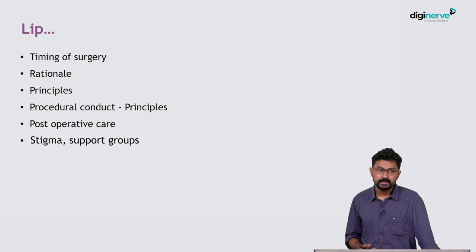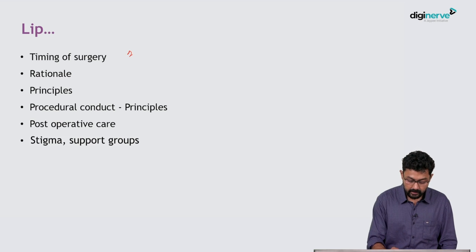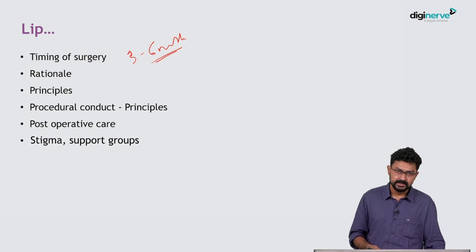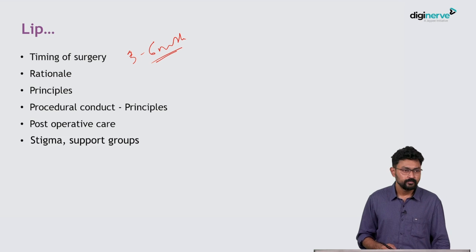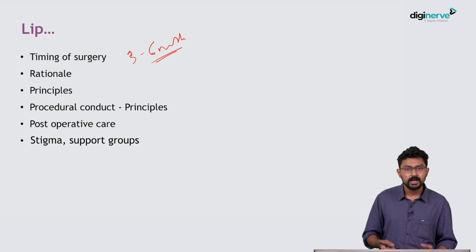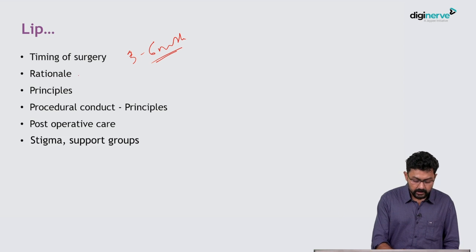For lip, the timing of surgery is ideally three to six months. Previously it was more for six months and beyond, but now with the development of pediatric anesthesia, with microscopes and loupes that we use for magnification, we can dissect lips at very early age. We can achieve very good results. Scarring is significantly less if we do it in early life.